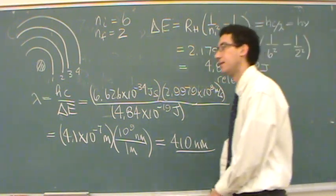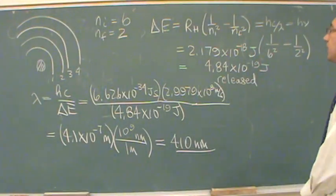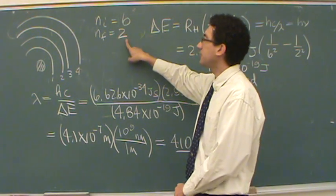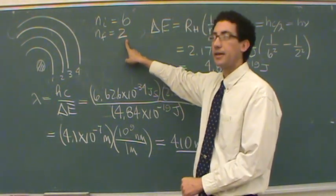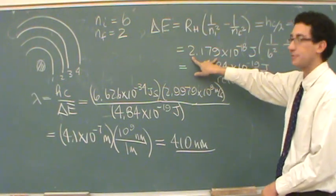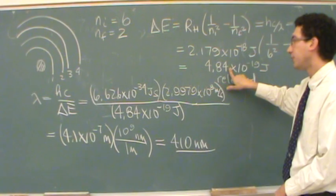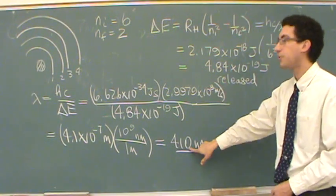When we solve for the change in energy, how many sig figs would we use? Okay. Good question. Six and two. Those are both exact numbers. So you're just limited by this value right here which has four. So we could have had one more sig fig here. Which means we could have had actually one more sig fig down here.